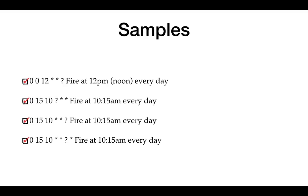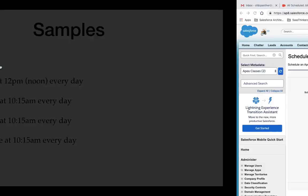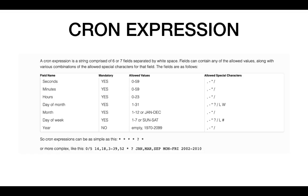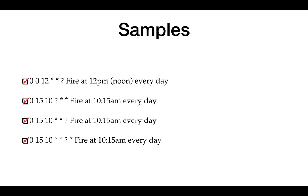Here we have four sample cron expressions. One runs at 12 PM noon every day, another runs at 10:15 AM every day. In the third and fourth examples, notice the position of the question mark differs — in one it is in the day-of-week position and in another it is in the day-of-month position. The final example also includes the optional year field. These are sample cron expressions we can work with.